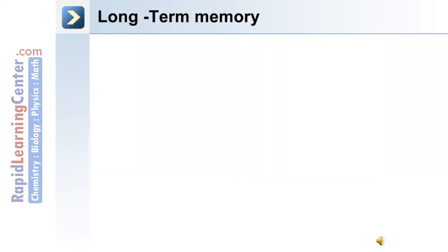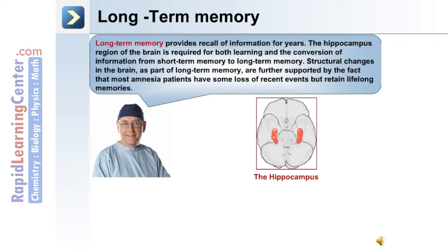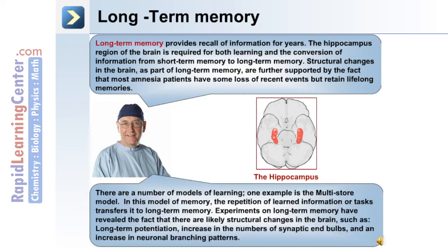Long-term memory provides recall of information for years. The hippocampus region of the brain is required for both learning and the conversion of information from short-term memory to long-term memory. Structural changes in the brain as part of long-term memory are further supported by the fact that most amnesia patients have some loss of recent events but can retain lifelong memories.